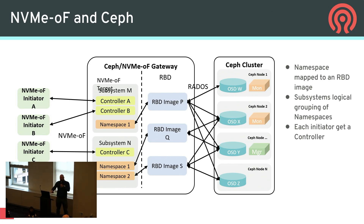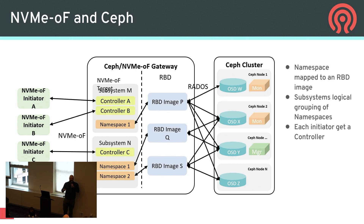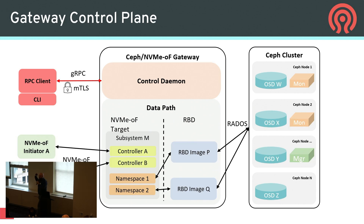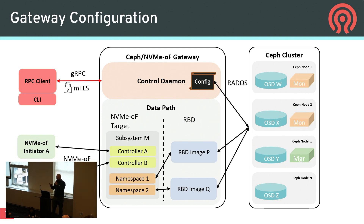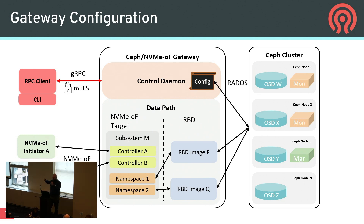Controllers are ephemeral per session. Once the client disconnects, that controller can go away and those contexts can be reused. You're not looking at increasing semaphores or contexts or trying to custom-tune this — it's going to be recycling itself. Control plane: you have the ability to communicate over gRPC to the control daemon. The data path is the initiator to controller subsystem on top of RBD to OSD, communicating over MTLS. The configuration of the gateway itself is stored in the OMAP, and the config can be migrated between instances.